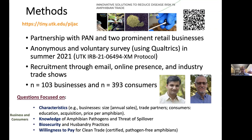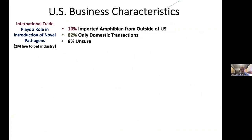We really focused on the characteristics of businesses and consumers, their knowledge of amphibian pathogens and the threat of spillover, various biosecurity practices, and their willingness to pay for clean trade. We asked businesses what percentage of their transactions are imported versus domestic, and the majority are actually trading domestically. If we just look at what's coming into the United States, that would give us a skewed idea of animals in our trade network. There are around 2 million amphibians imported to the pet industry per year, but we're probably talking over 20 million amphibians actually in the industry at any given time.